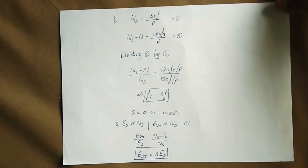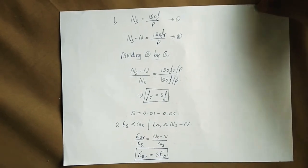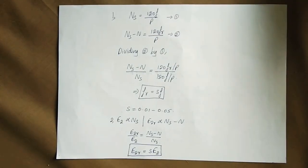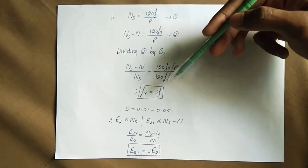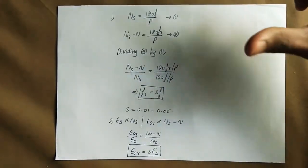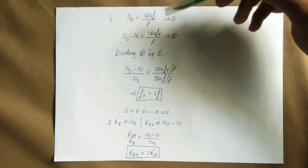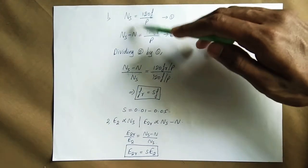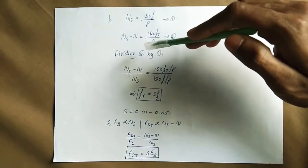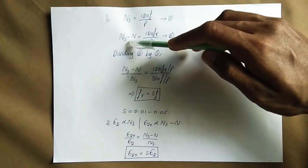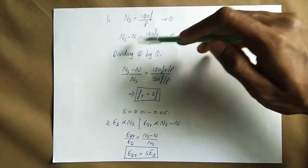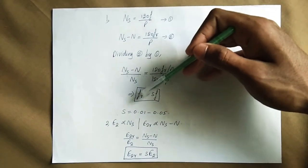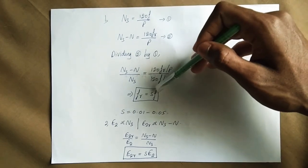How does the rotor behave at standstill versus running condition? At standstill, the rotor speed N is zero. The synchronous speed Ns is equal to 120F/P. Under running condition, the rotor frequency Fr relates to the slip. Running frequency is equal to S times the supply frequency.